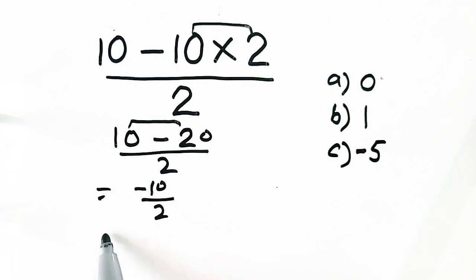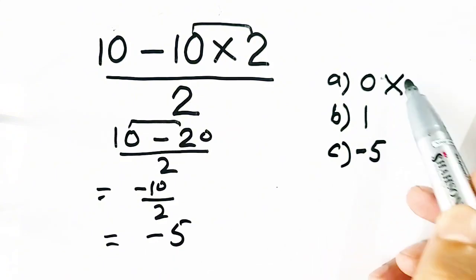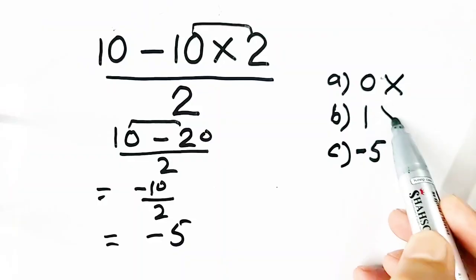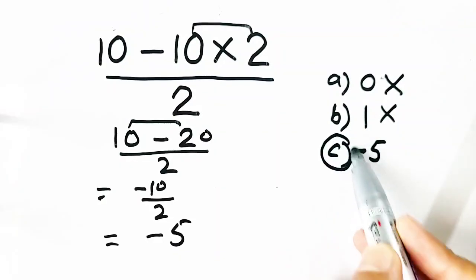Now minus 10 divided by 2 equals minus 5. So 0 is not correct, 1 is not correct. Option C is the correct answer. Thank you for watching my YouTube video.